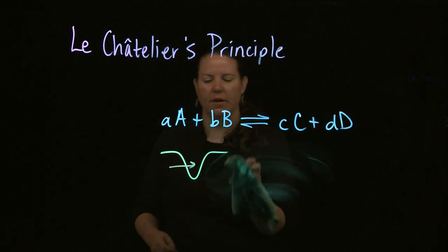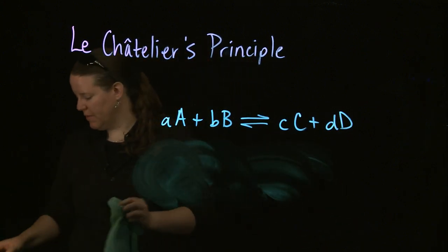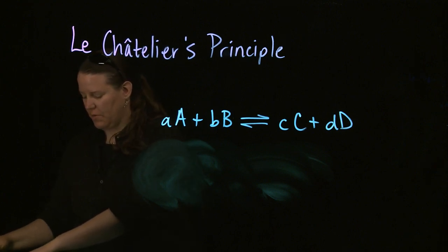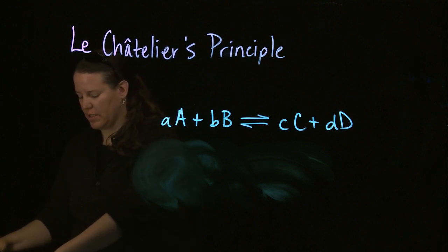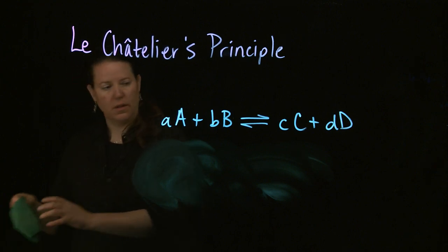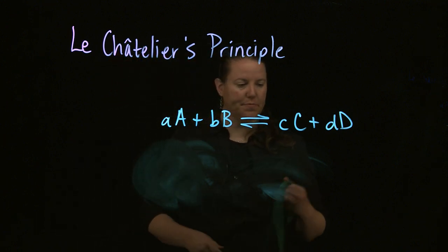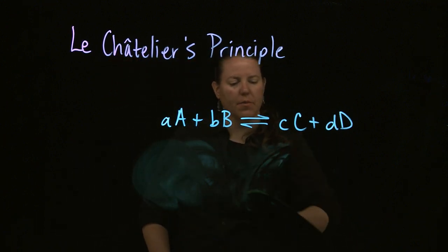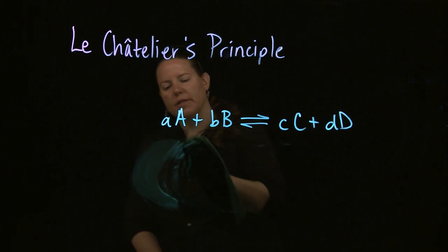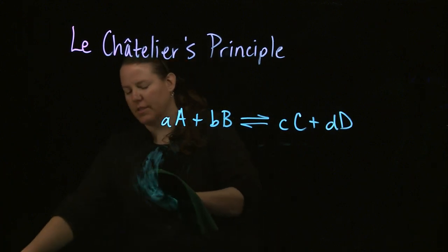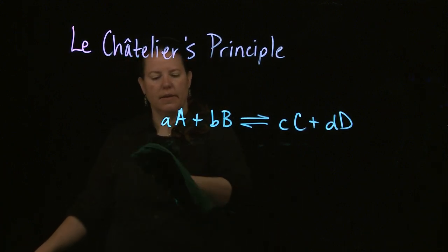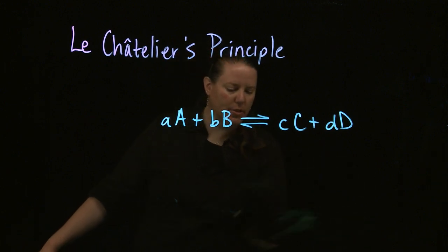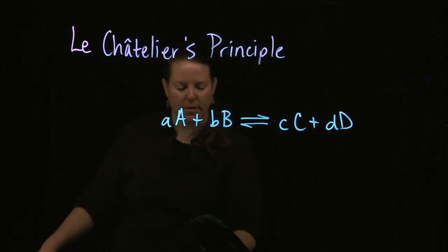Let's give several examples for this equilibrium and then talk about what it looks like in terms of a real example. In a Le Chatelier question you almost always have all kinds of things you could do to the system.